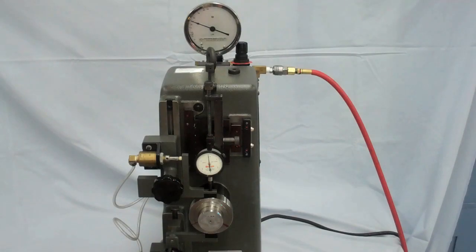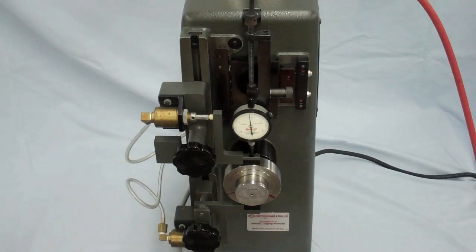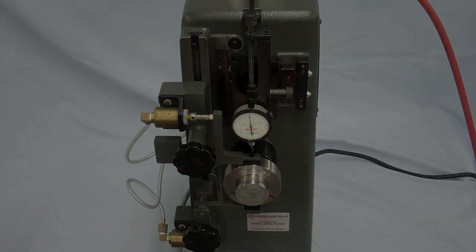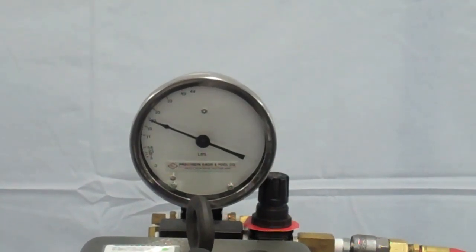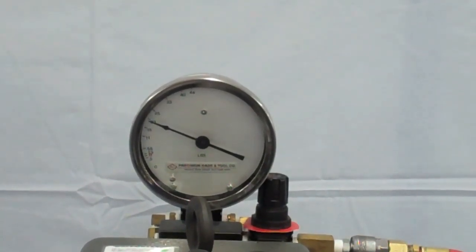There is a large, round-faced pressure gauge on the top of the radial play gauge. By adjusting the regulator on the top of the radial play gauge, the gauging pressure on the outer race can be selected for different bearings.